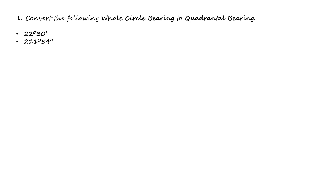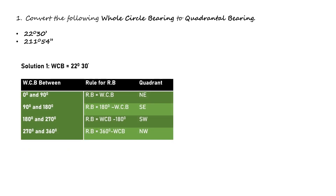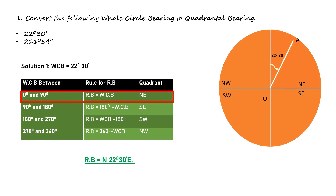Example 1: Convert the following whole circle bearing to quadrantal bearing — 22 degrees 30 minutes. Solution: WCB equals 22 degrees 30 minutes. From the conversion table, if the WCB value is between 0 and 90 degrees, the reduced bearing value is the same. Depicting this in quadrants, it lies in the first quadrant. The reference meridian is N, measured eastwards. Hence the bearing in the quadrantal system is designated as N 22°30' E.